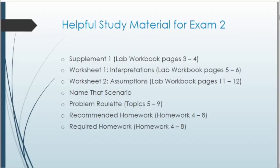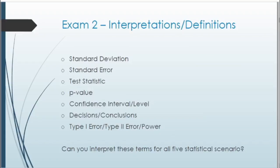Problem Roulette goes over old exam questions, so that's also really helpful. Make sure that if you do Problem Roulette, you specifically click on Topics 5 through 9, as those will be relevant for exam 2. You can also look at the homeworks — both recommended and required — and homeworks 4 through 8 are relevant to this exam. For this exam, we've also gone over a lot more interpretations and definitions. The worksheets and supplements are helpful tools for learning these interpretations across all five statistical scenarios, including how to transfer them from one type of test to another.